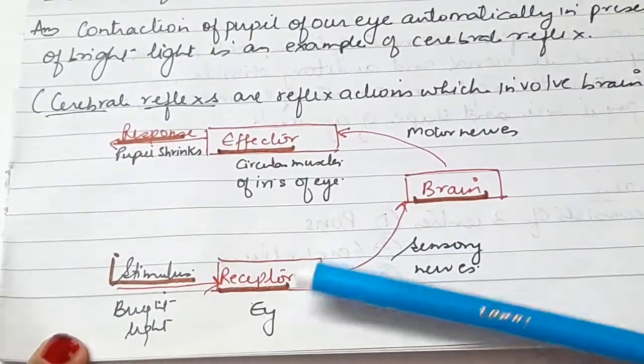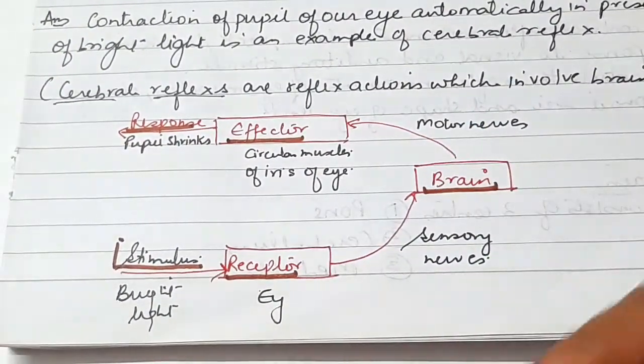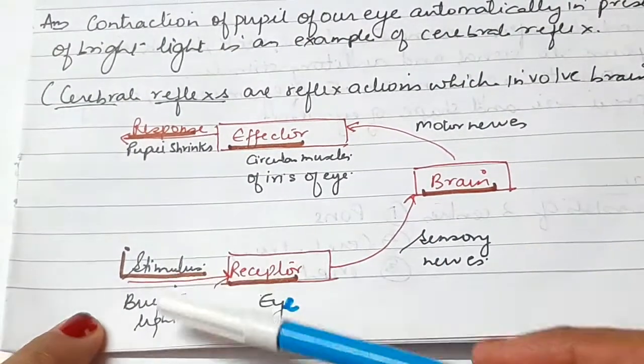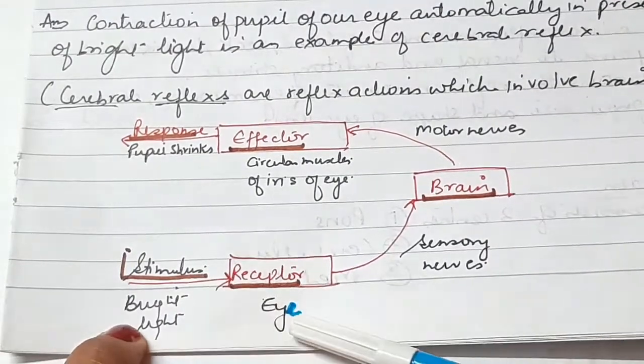In this case, the receptor is the eye. The eye will be the receptor. And the stimulus is the bright light, right? So bright light is the stimulus, receptor is the eye.